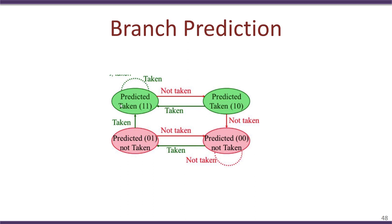The speculative execution that follows would hopefully have better accuracy and therefore boost performance. What the Spectre attack showed is that this branch prediction combined with speculative execution could result in a vulnerability by which secret data present in a program can be read.